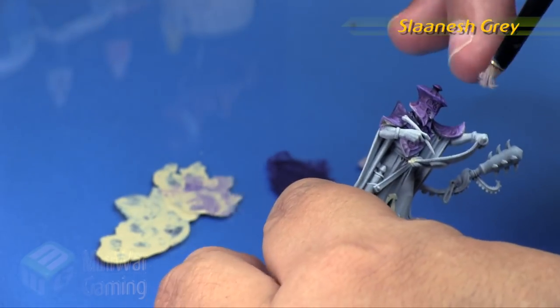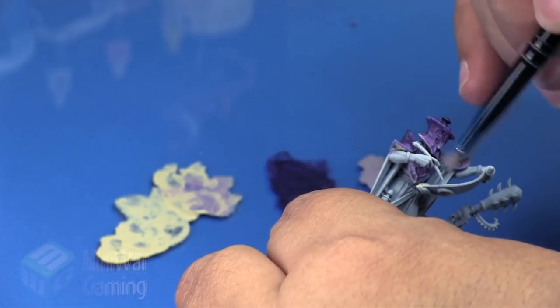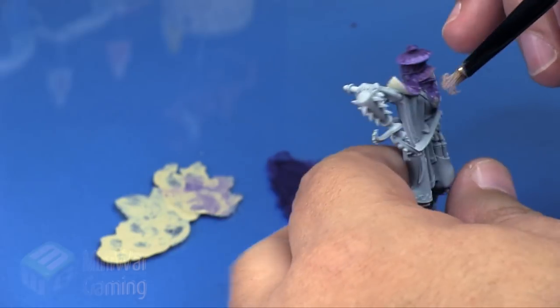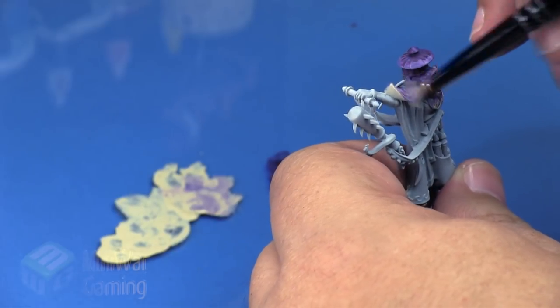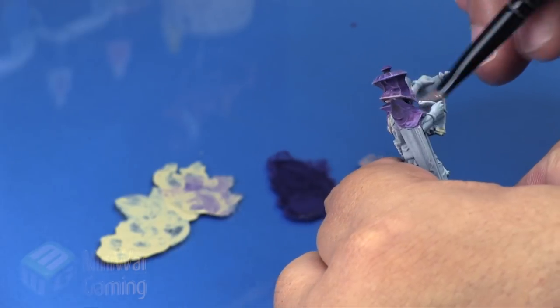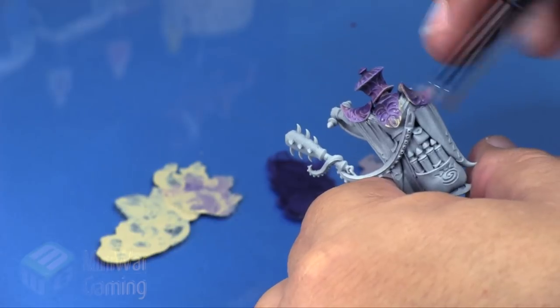Next is Slaanesh Grey. This is going to be a quick little dry brush, concentrating basically at the brightest points of the armor and then drawing upwards. We're just going to go around and very lightly bring out the texture of the armor. It's pretty straightforward. We're concentrating our brush strokes at the brightest points of the armor.